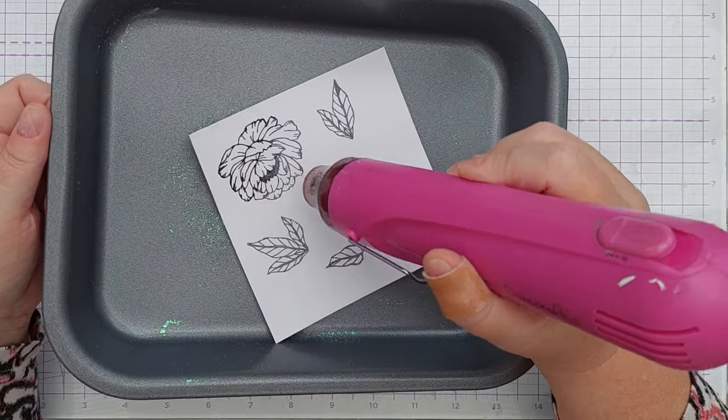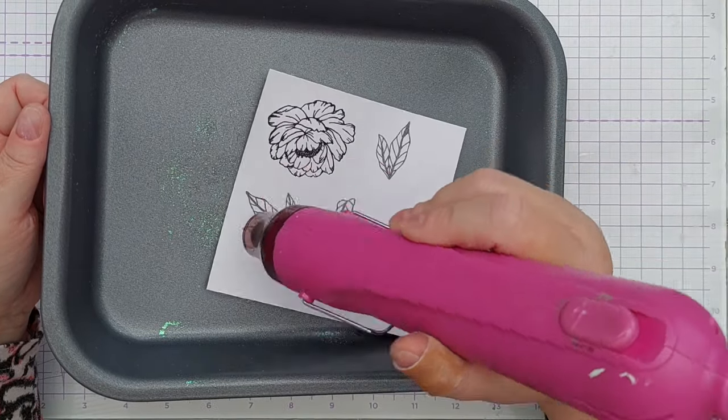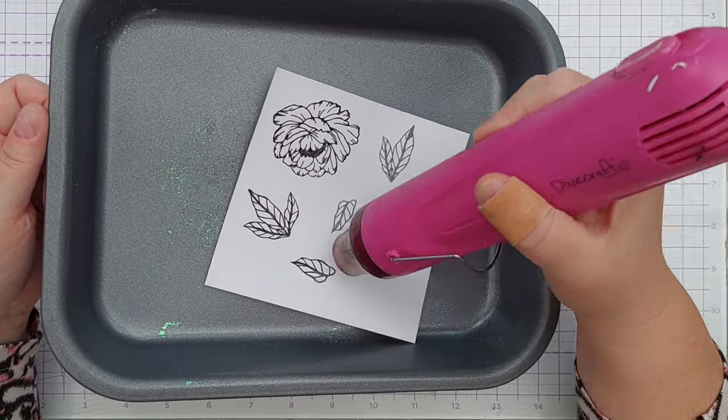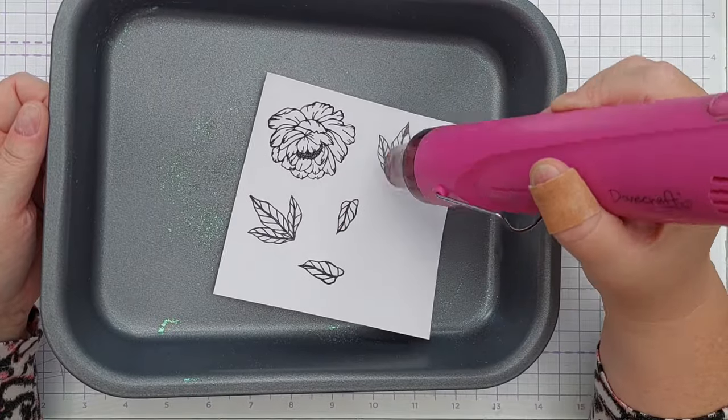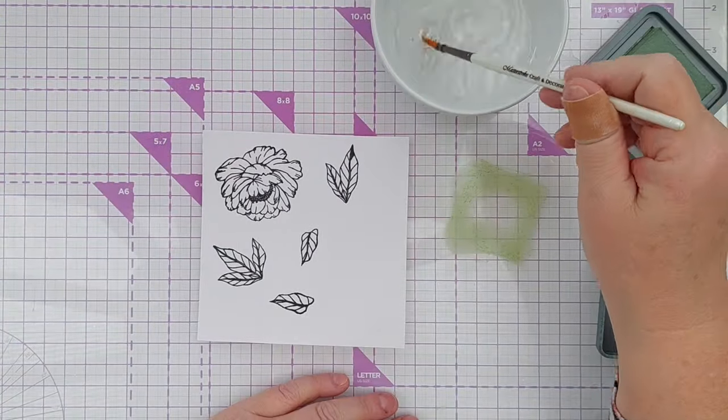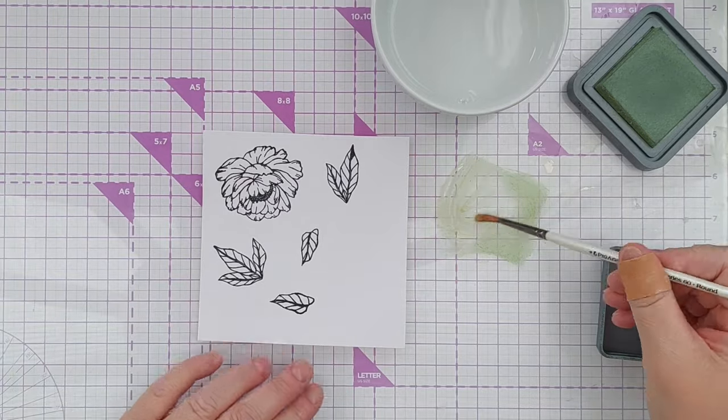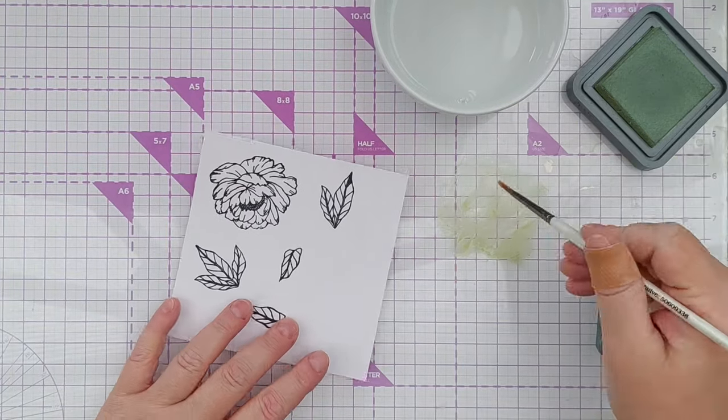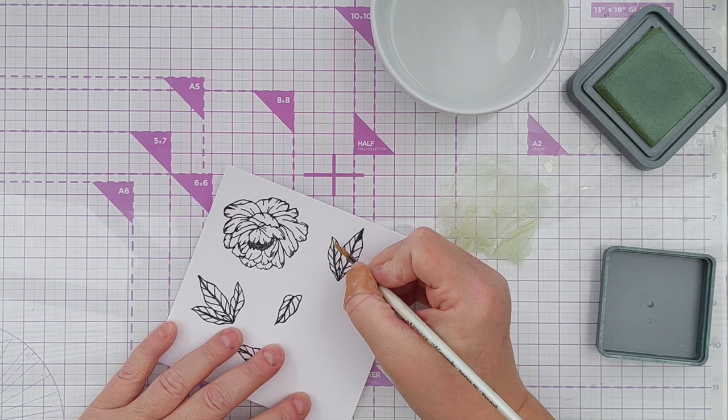So I dipped my inked piece of paper into my clear embossing powder and then melted the embossing powder using my heat tool in my baking tray. Once that was cooled and set, I smushed some Bundled Sage distress oxide on my glass media mat.